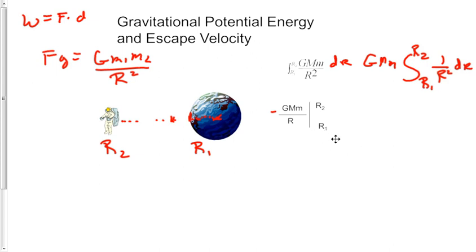So that's going to look like this. We're going to have a big G, big M, little m, multiplied by, and we'll keep the negative outside, 1 over r2 minus 1 over r1.